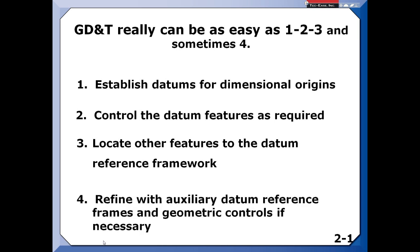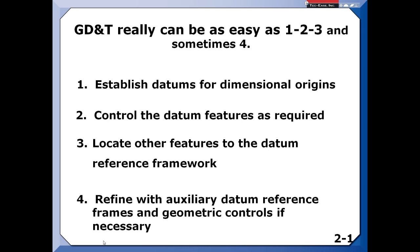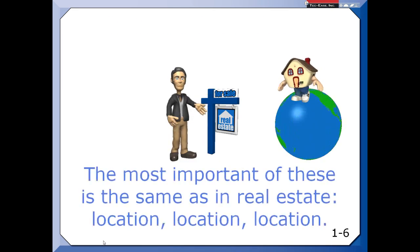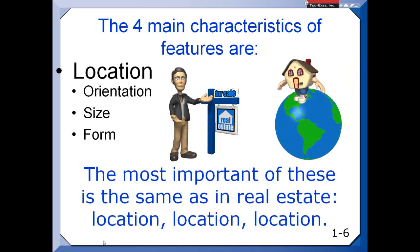And then, sometimes, only if necessary, do we add auxiliary datum reference frames and refinements to the locating controls for geometric tolerancing. So we have four characteristics. In general, they are location, orientation, size, and form. But just like in real estate, the most critical of those is location.